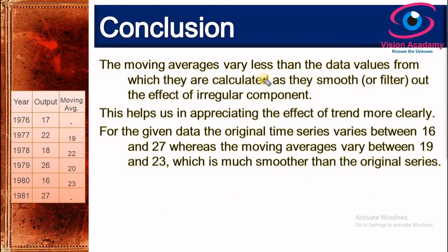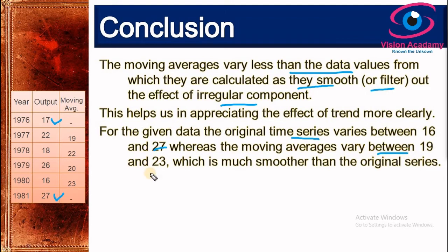The variation has been filtered, which is the effect of removing the irregular component from the time series data. For the original time series, values vary between 17 and 27. Whereas after applying the simple moving average, the new series varies between 19 and 23, which is much smoother than the original series.